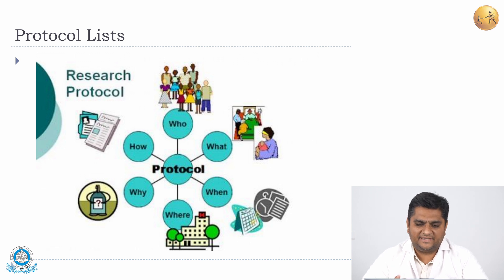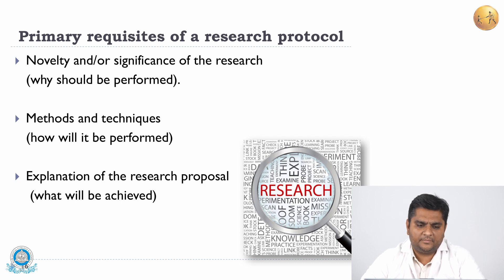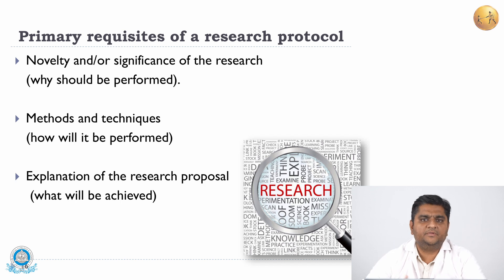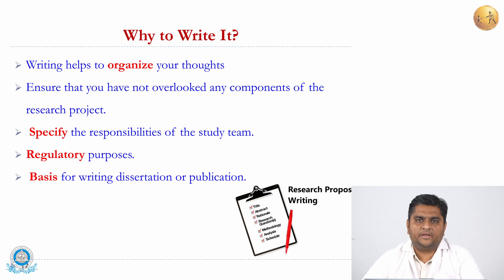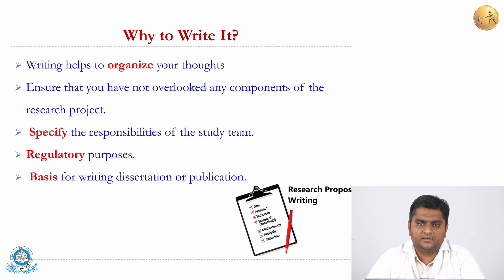A research protocol will basically list who is going to be studied, what we are going to study, when it is going to happen, the setting, why we are doing the study, and how we are going to do the research. The primary requisites of a research protocol are novelty or significance of the research, the methods and techniques for how it will be performed, and an explanation of what will be achieved after the research is completed. Writing it helps organize our thoughts, ensures we have not overlooked any components, specifies responsibilities of each team member, and is required for regulatory purposes such as funding applications or ethical committee approval. It also becomes a basis for writing the dissertation or publication planned in the future.